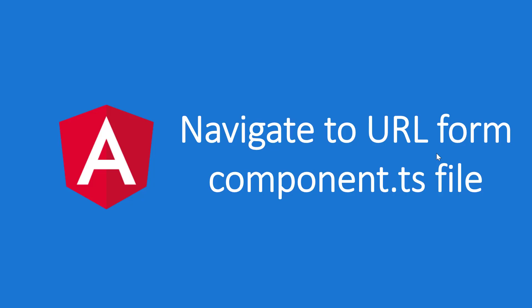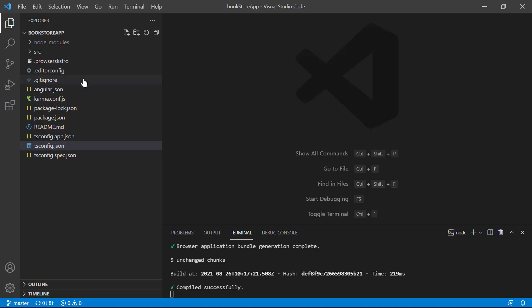As of now in this Angular application we are navigating by using the router link, and this router link is available on the HTML template. But there are some situations where we cannot navigate from the HTML template and we want this navigation from the component file. Let's understand the scenario in the bookstore Angular application.